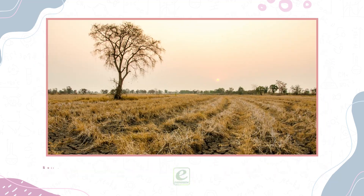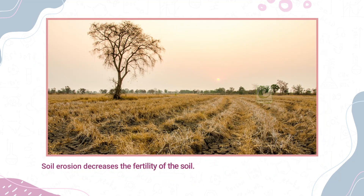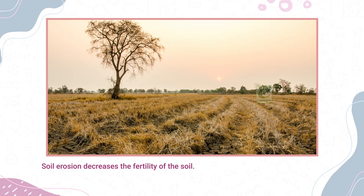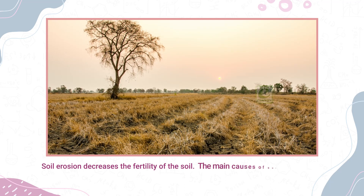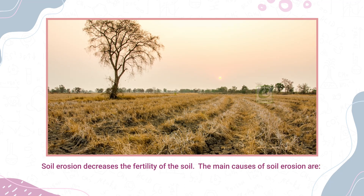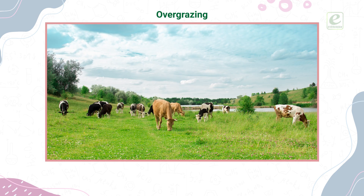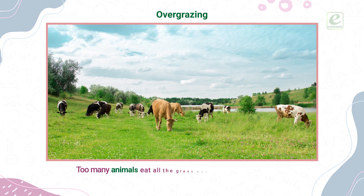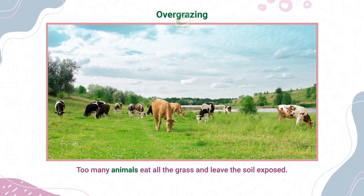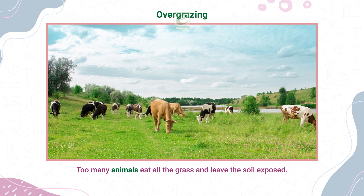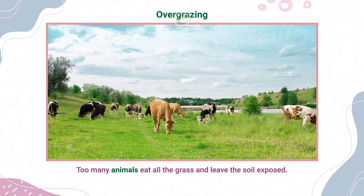Soil erosion decreases the fertility of the soil. The main causes of soil erosion are: Overgrazing — too many animals eat all the grass and leave the soil exposed.